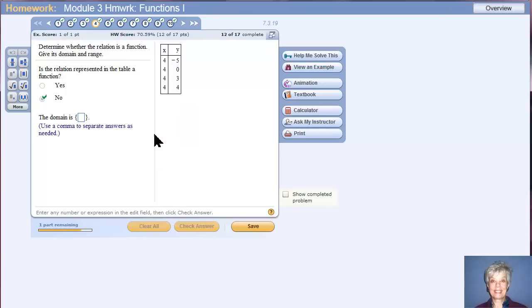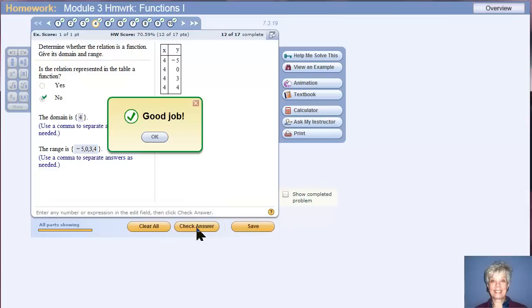Now what is the domain? We've only got one number in the domain. It occurs 4 times, but it's the same number. 4. Meanwhile, the range is negative 5, 0, 3, and 4. All of the numbers on the right. And I'm right there. Let's go on to number 5.